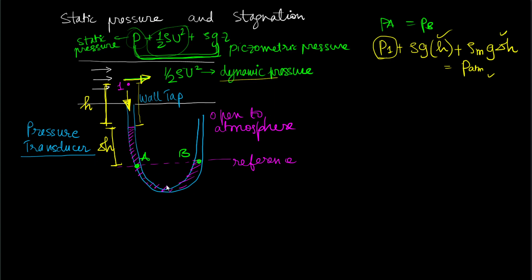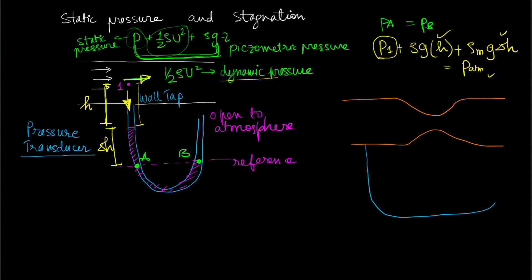This single tube can also be replaced. Instead of having just a single tube, we can connect a tube from one end to the other to measure the difference in pressures directly. You connect it between two points — point one and point two — and since the pressure at point one is higher, the manometric fluid levels will reflect that difference.